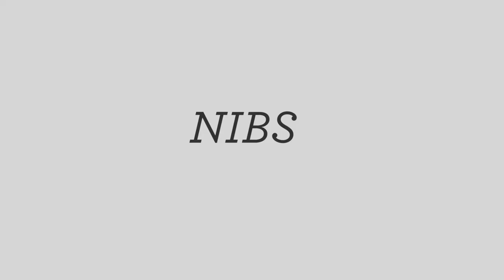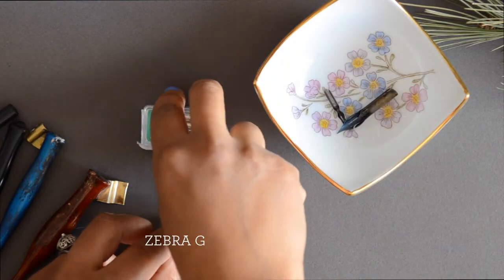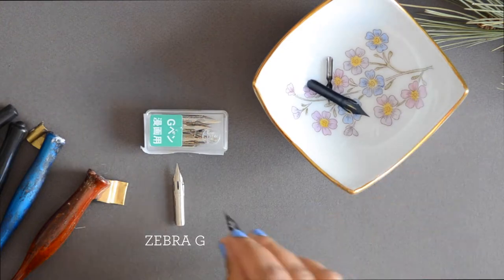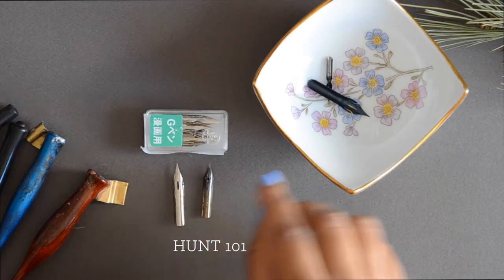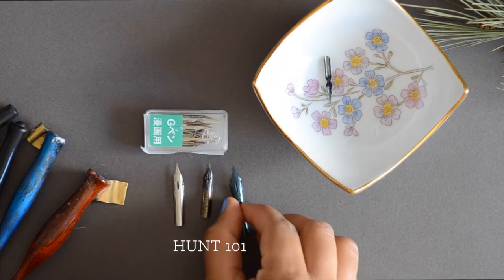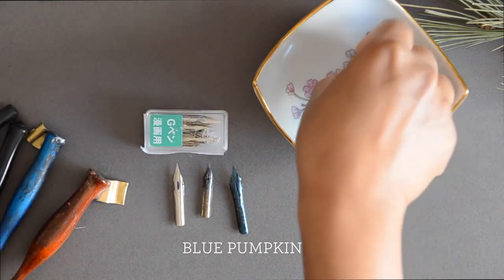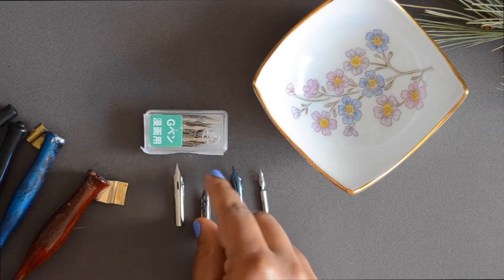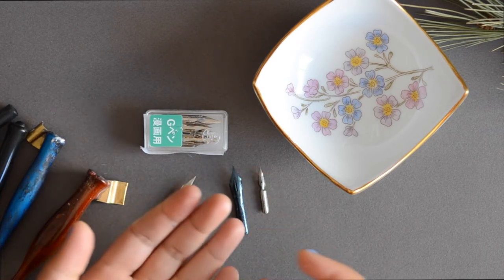For nibs, I really like the following. I like the Zebra or Nikko or Tachikawa G. They're all pretty similar. I also really like the Hunt 101. It's very flexible. The Blue Pumpkin and the Brause 66 EF. I find these are all pretty beginner friendly nibs as well. And which one you like is going to depend on how you write and how heavy handed you are.